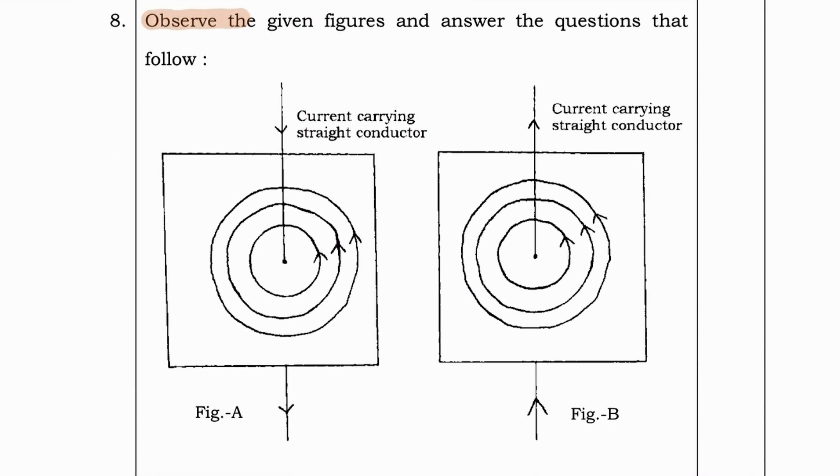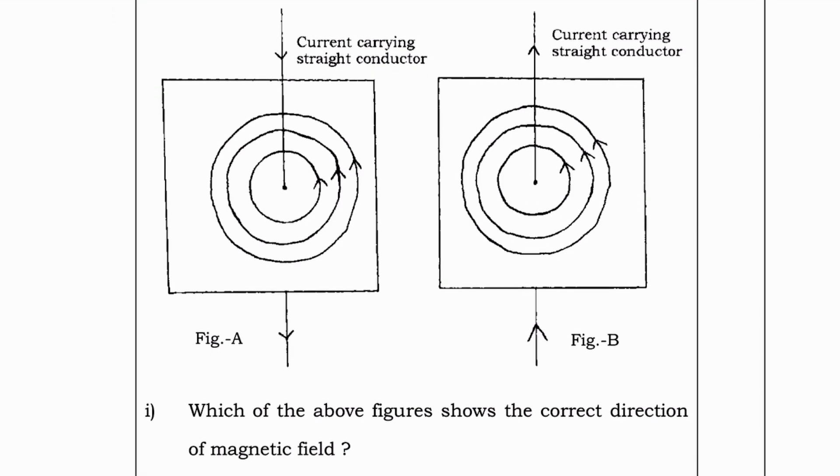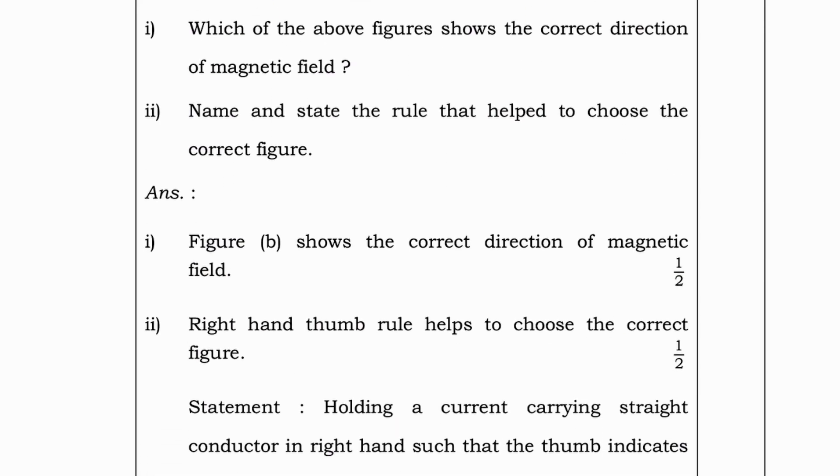Next question, observe the given figures and answer the questions that follow. Observe the figure here, current is passing, in the first figure current is passing in downward direction and in figure B, this is the direction. Next, let's go to question. Which of the above figures shows the correct direction of the magnetic field? And, name and state the rule that helped put to choose the correct figure?